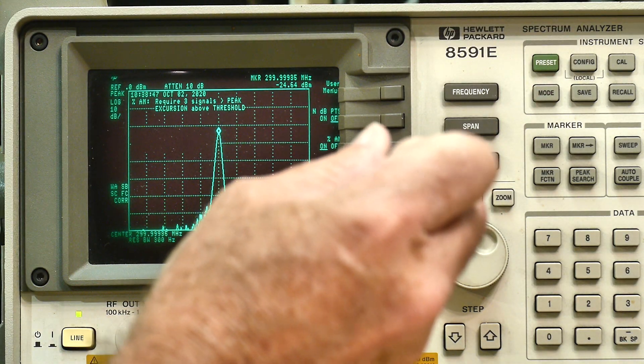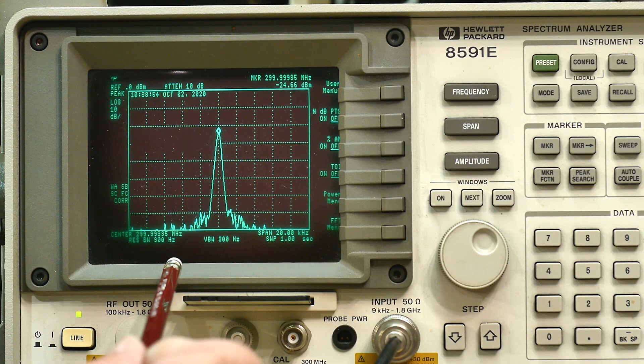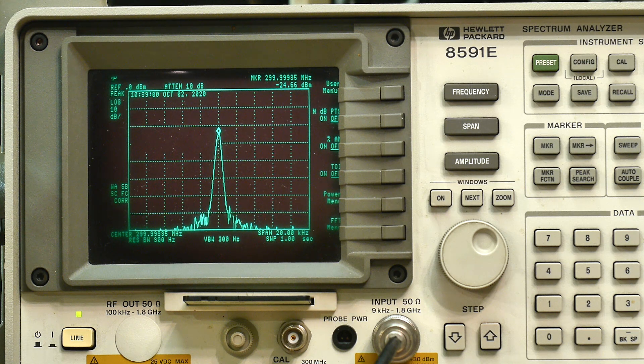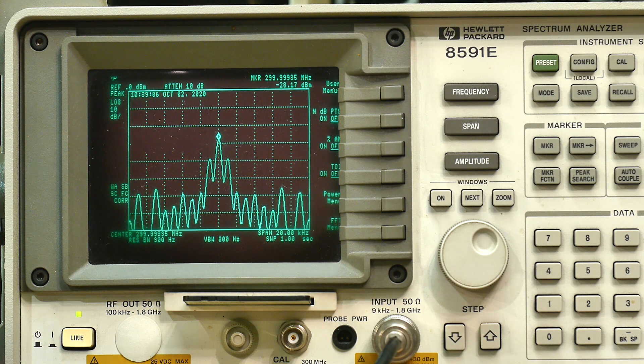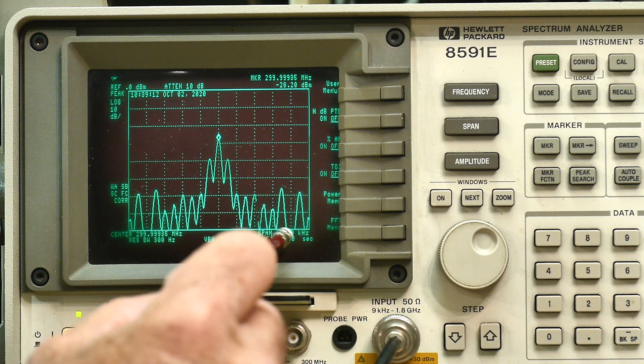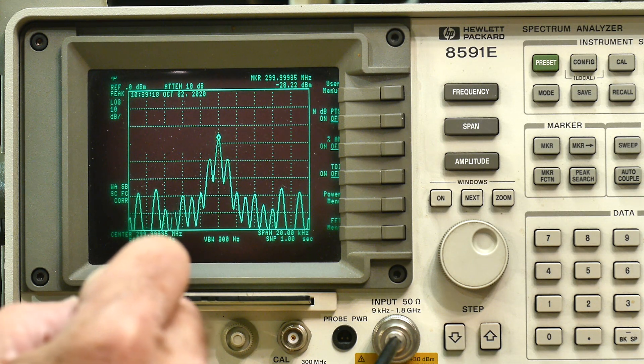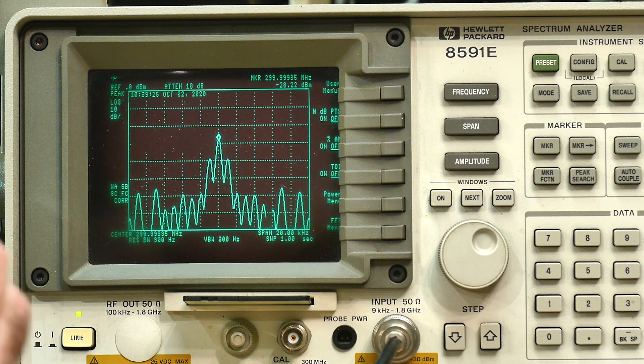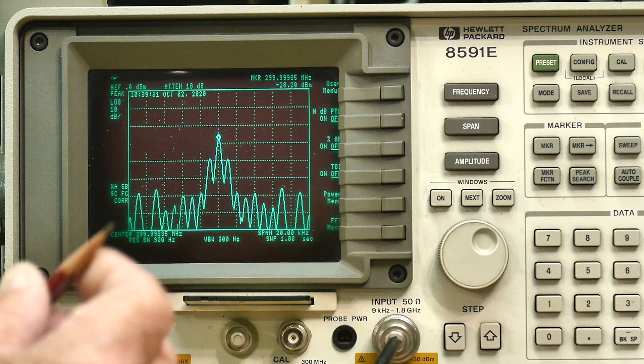Let's see here, let's do a span and see. Let's do AM modulation and there we go, we have AM modulation set. Currently we have a span of 20 kilohertz and our resolution bandwidth is set to 300 Hertz.